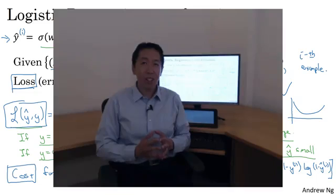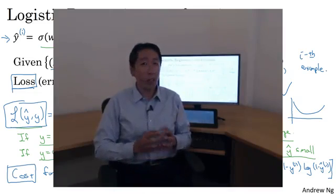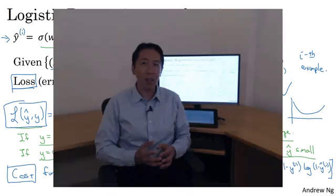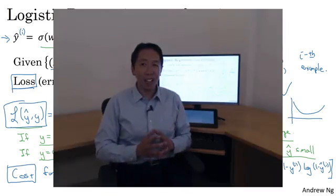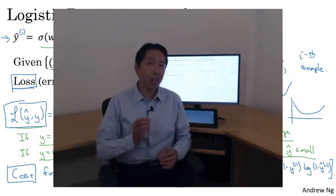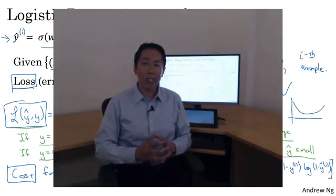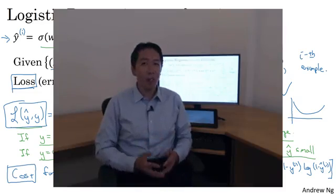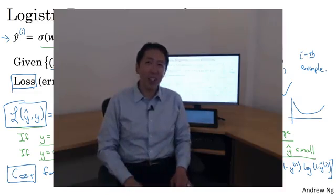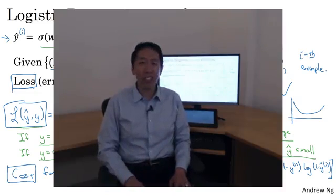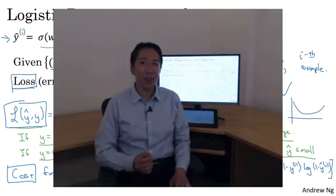So you've just seen the setup for the logistic regression algorithm, the loss function for a training example, and the overall cost function for the parameters of your algorithm. It turns out that logistic regression can be viewed as a very, very small neural network. In the next video, we'll go over that so you can start gaining intuition about what neural networks do. So with that, let's go on to the next video about how to view logistic regression as a very small neural network.